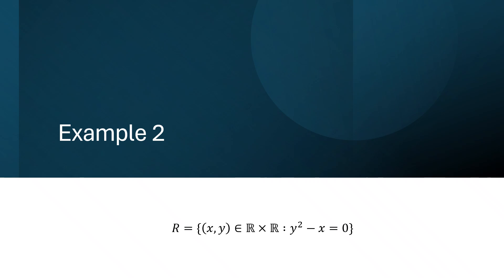For our second example, we also have a relation defined on the real numbers. x and y are related if they satisfy the equation y squared minus x equals 0. If we take this equation and solve it for y, we first get y squared equals x, and solving for y gives y equals plus or minus the square root of x. Here we need to be careful — if x equals 0, we get y equals plus or minus 0, which is just 0, so we don't get a useful counterexample.